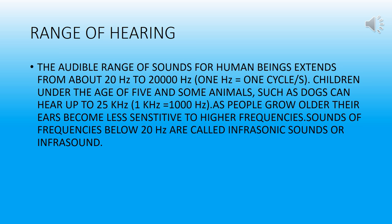Range of Hearing: The audible range of sounds for human beings extends from about 20 hertz to 20,000 hertz (1 hertz equals 1 cycle per second). Children under the age of 5 and some animals such as dogs can hear up to 25 kilohertz (1 kilohertz equals 1000 hertz). As people grow older, their ears become less sensitive to higher frequencies.